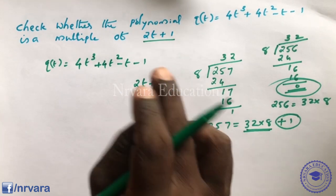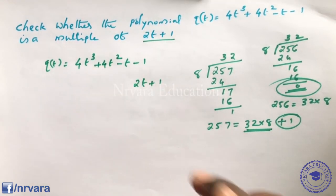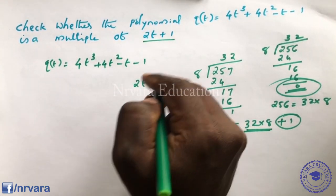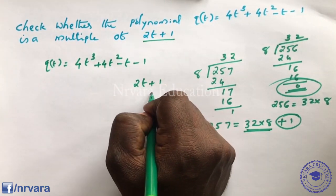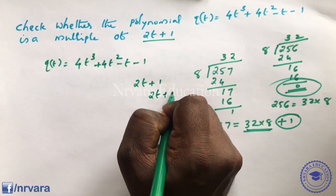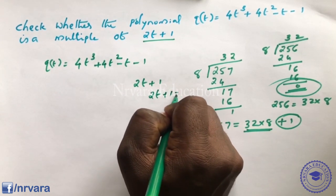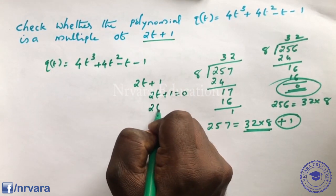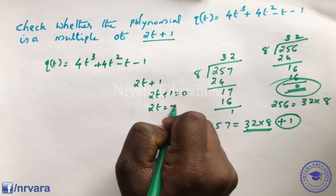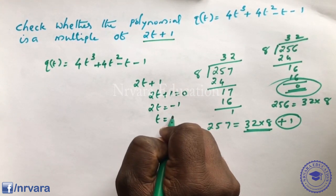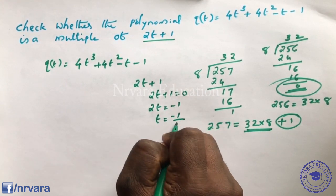For the remainder theorem approach, set 2t + 1 = 0. So 2t = -1, which gives t = -1/2.